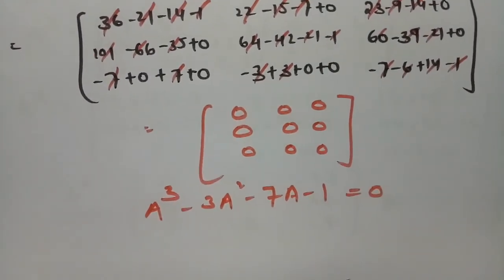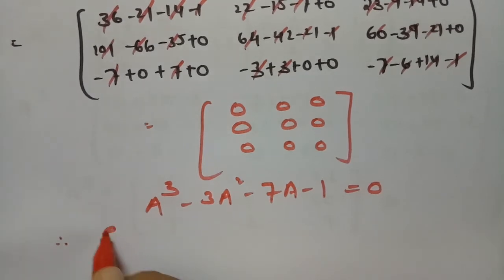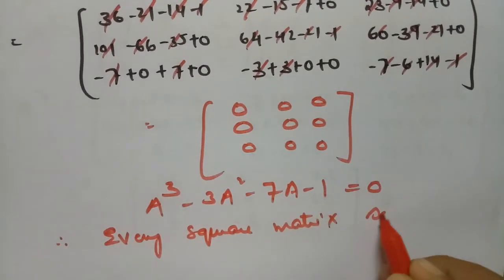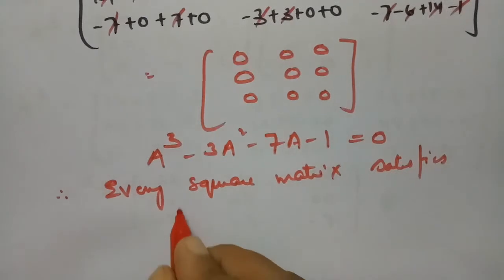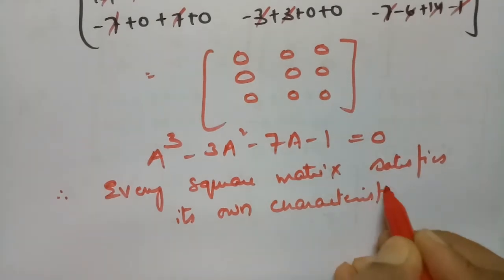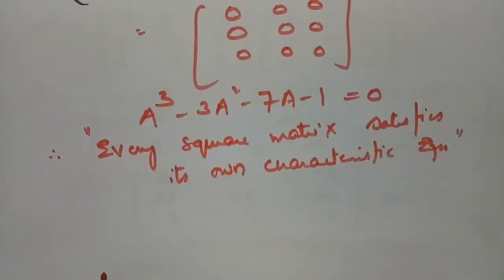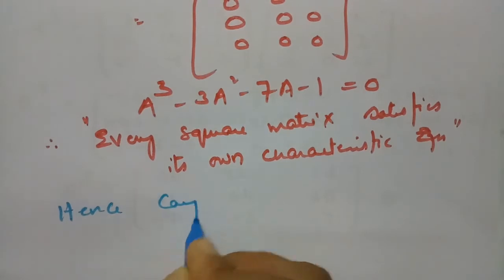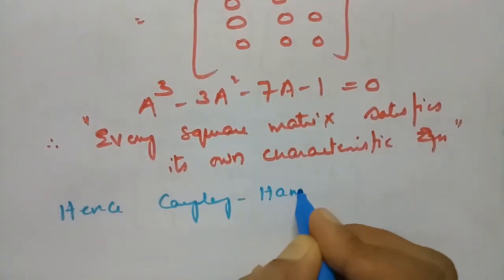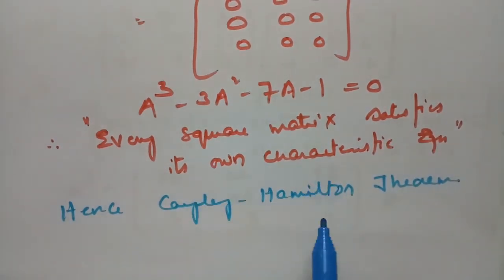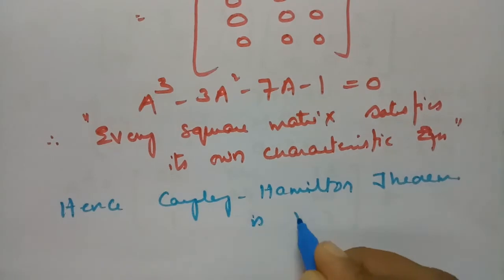This result is the characteristic equation with A substituted in place of lambda. Therefore, every square matrix satisfies its own characteristic equation, and Cayley-Hamilton theorem is verified.